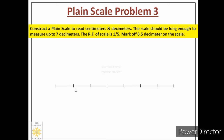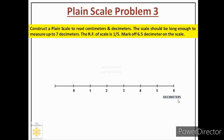From the second marking we will place the labeling. We will label it as 0, 1, 2, 3, 4, 5, 6. The 7th decimeter is on the left side of 0. So these are 6 decimeters. Below it, with the help of guidelines and gothic letters, we will mention decimeters.